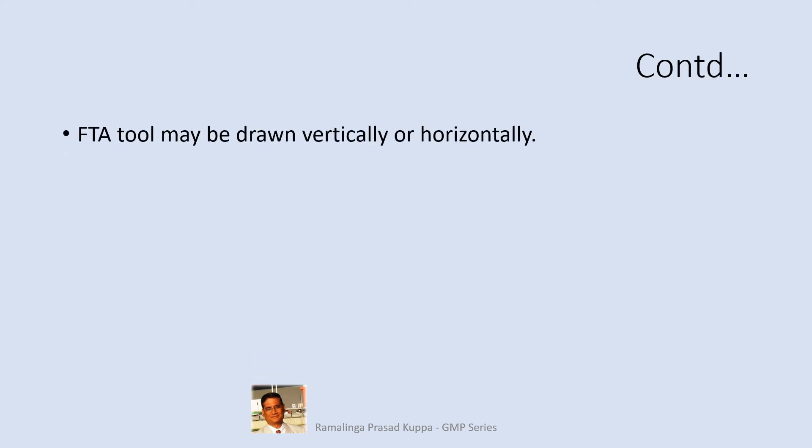The FTA tool may be drawn vertically or horizontally. Generally it is drawn vertically from top to bottom, placing the final failure on the top of the tree. If made horizontally, the final event will be on the left side and the branches expand horizontally from left to right.